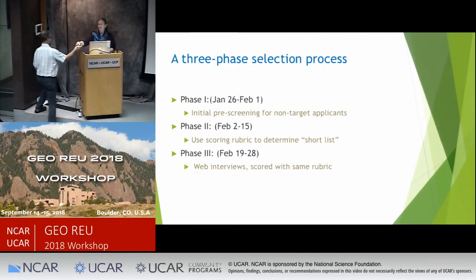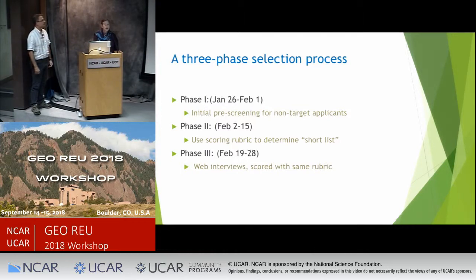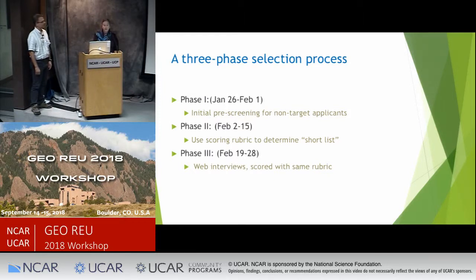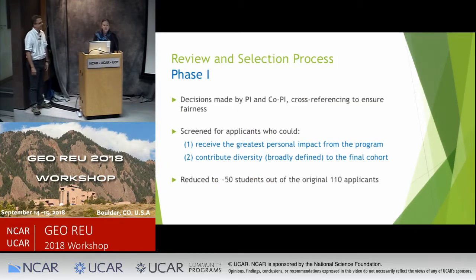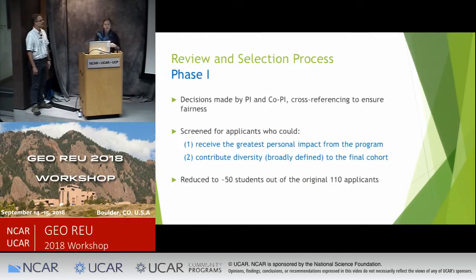We broke down the selection process into phases. Phase one was a pre-screening process. Phase two involved developing a scoring rubric and scoring every applicant. Phase three was conducting web interviews using the same rubric. The two of us made phase one decisions separately, then compared our notes — if we disagreed on an applicant, we talked about it. We were screening to identify students who could receive the greatest personal impact from the program and contribute broadly to diversity in our final cohort.